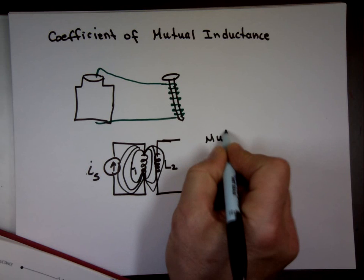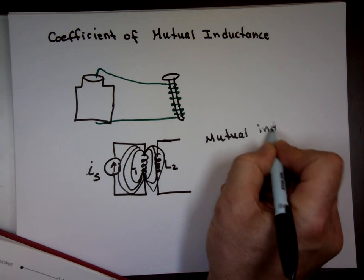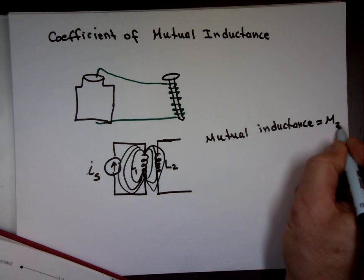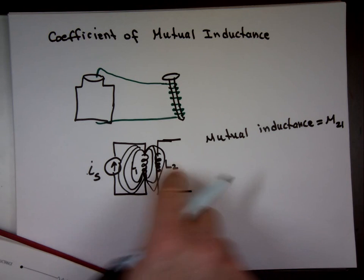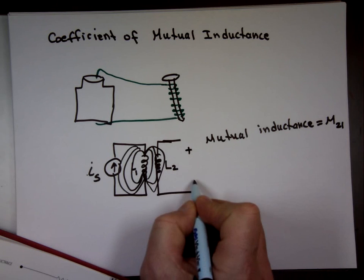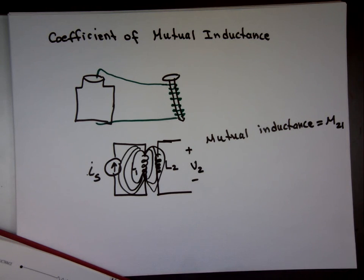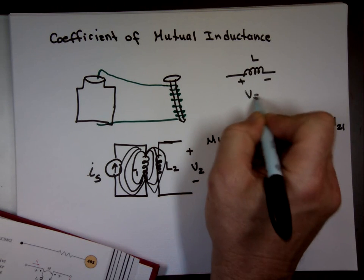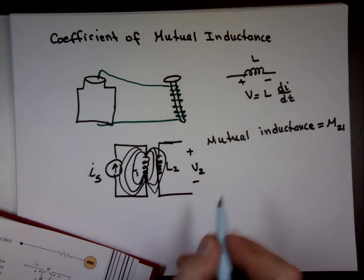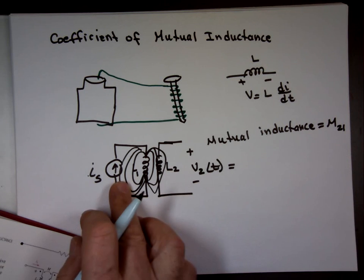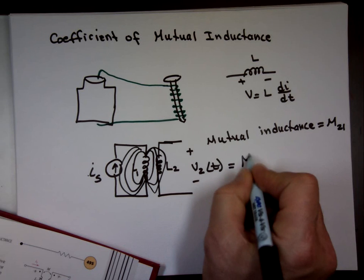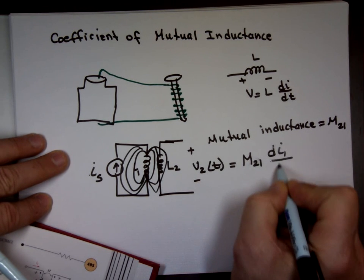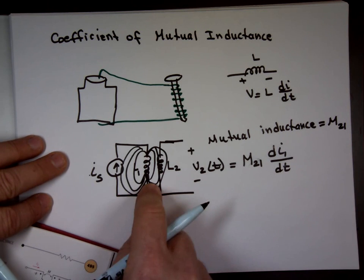Mutual inductance — we use the letter M. We put the effect of M from one inductor onto the other. We found out there's a voltage here. For an inductor, the voltage is V = L·dI/dt. Well, the value here of this voltage is not going to be L1 or L2 — it's going to be a different value called M, mutual inductance. We need to figure out what that number is — it's M times the derivative of the current through inductor one. So that current going through that, its derivative times the mutual inductance.